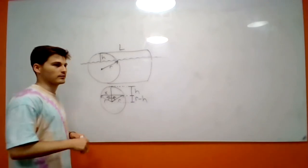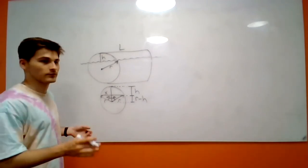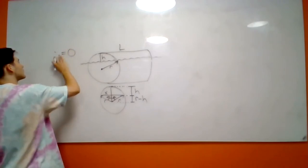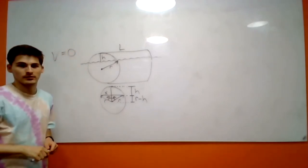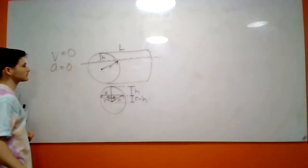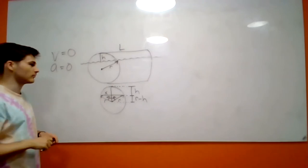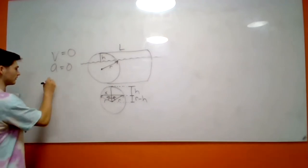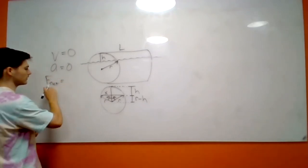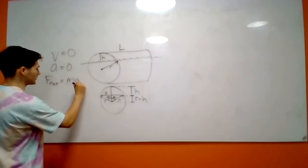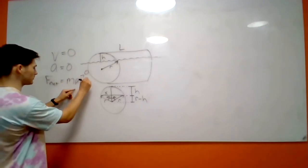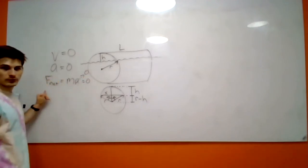Starting off, we'll assume that the velocity is zero — so it's stationary and not moving. If our velocity is zero, then our acceleration has to be equal to zero as well. If acceleration is zero, we know that the net force of the object has to be zero, because net force equals mass times acceleration.